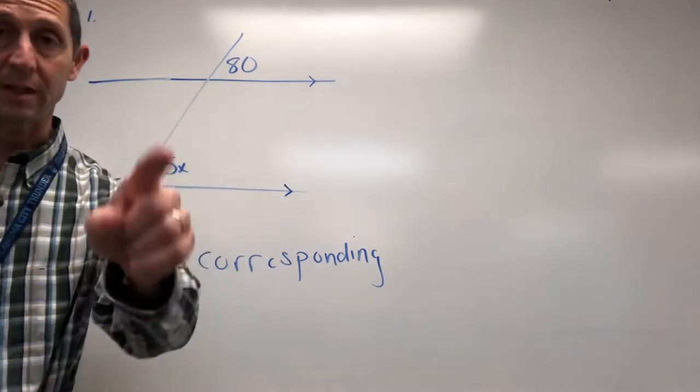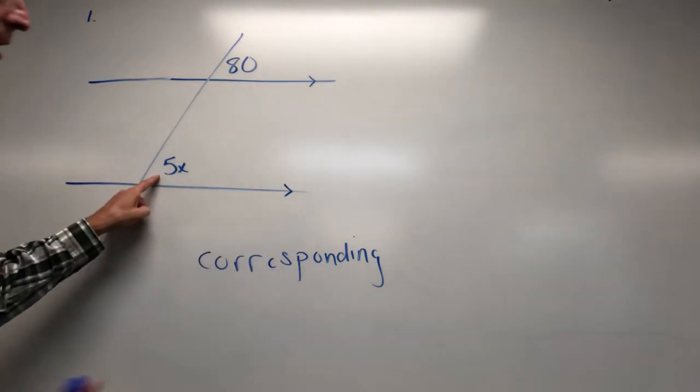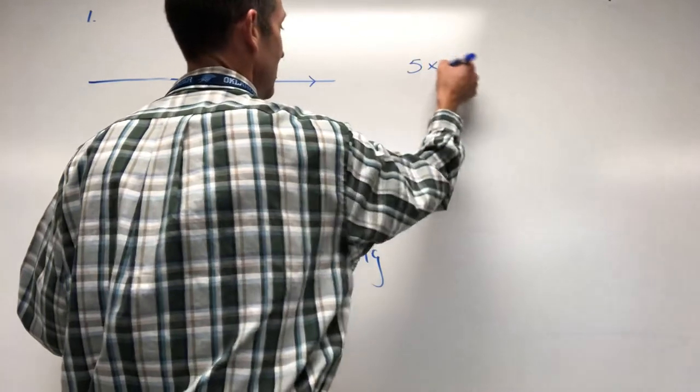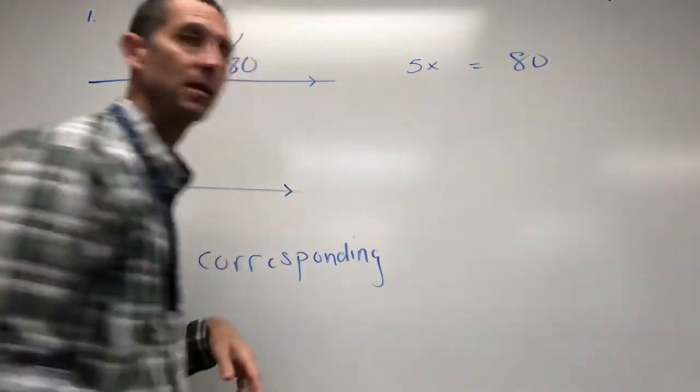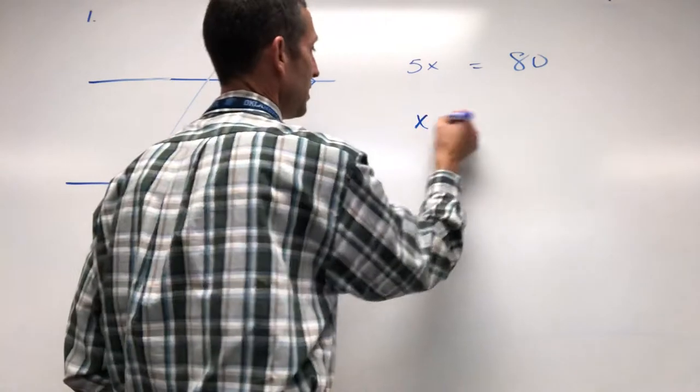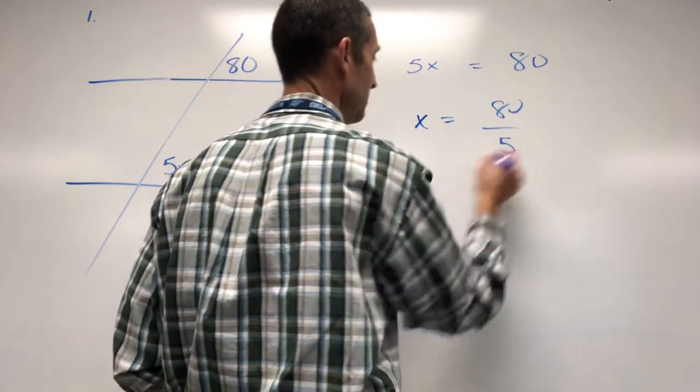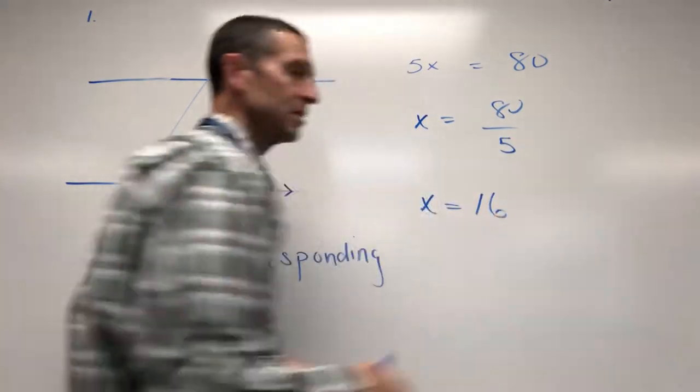So corresponding angles set equal to each other. So we can grab the 5x, we can grab the 80 and set them equal to each other. Solve this. We've got 80 divided by 5, x equals 16.